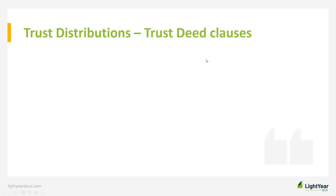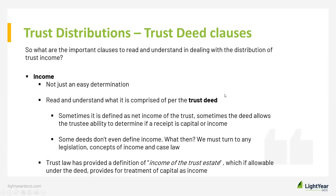Let's look at the important trustee clauses dealing with the distribution of trust income. Income is not an easy determination — you need to read and understand what the trust deed states as income of the trust. Sometimes it's defined as net income; sometimes the deed allows the trustee to determine if a receipt is capital or income in nature. Some deeds don't even define income. In that case, we must turn to legislation concepts of income and any relevant case law.